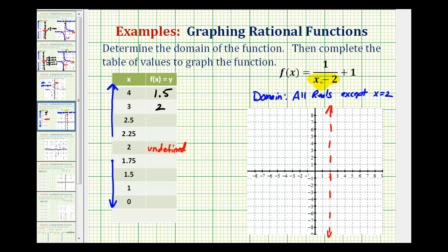When x is equal to 2.5, notice how the denominator would be 0.5. So we'd have y equals one divided by 0.5 plus one. 0.5 is equal to one-half. Dividing by one-half is the same as multiplying by the reciprocal. So we can write this as one times two over one or two plus one. That would be two plus one or three.